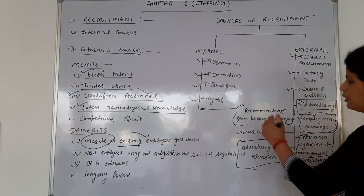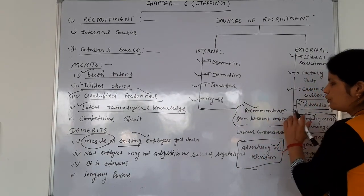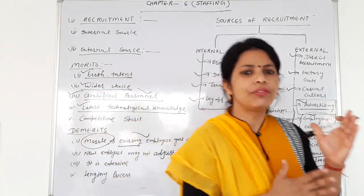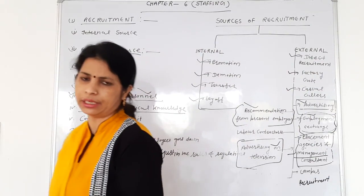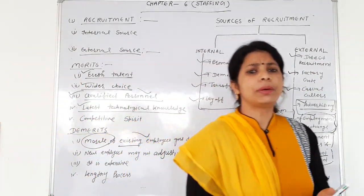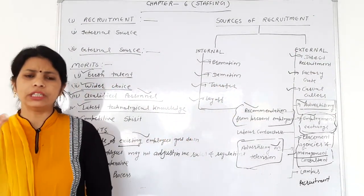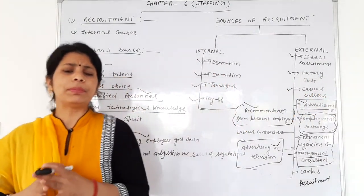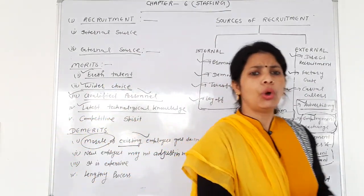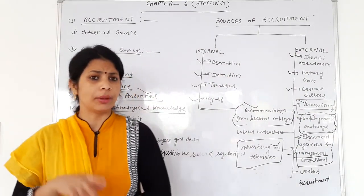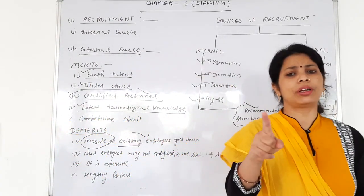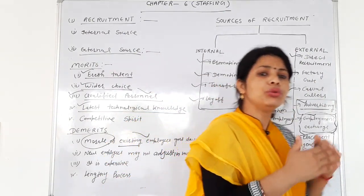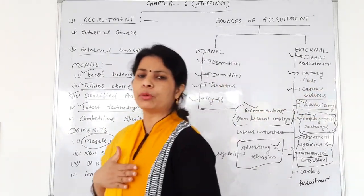Today we will discuss the remaining methods. First method: recommendation from present employee. This means hiring a new employee through the recommendation of a present employee — सिफारिश से एक नया employee हायर करना. Sometimes the organization invites its present employees to provide the name of any relative or known person. Based on the present employee's recommendation, the organization hires a new employee.